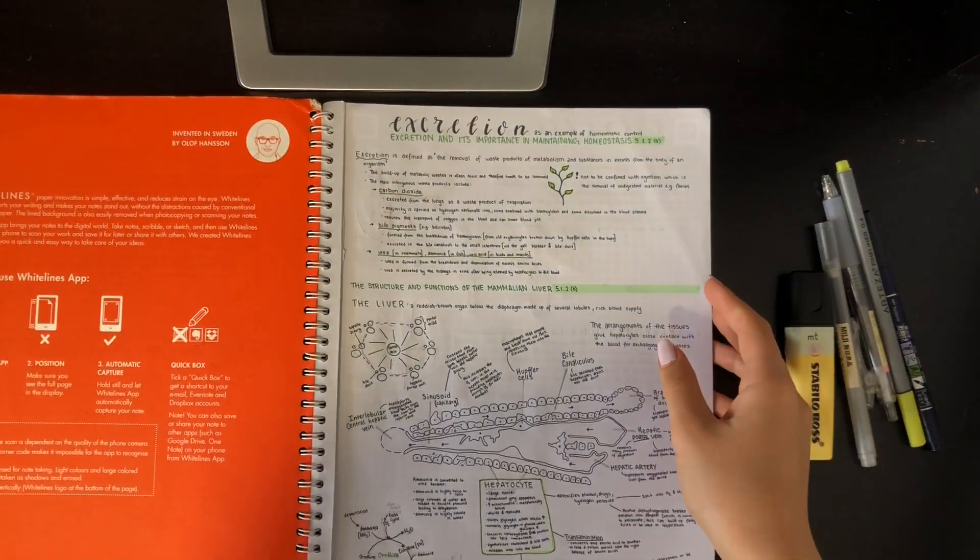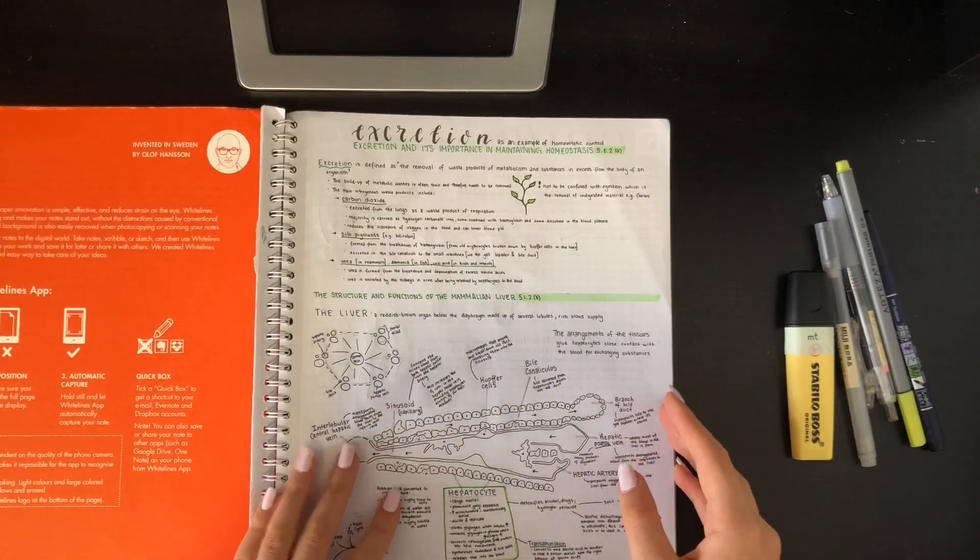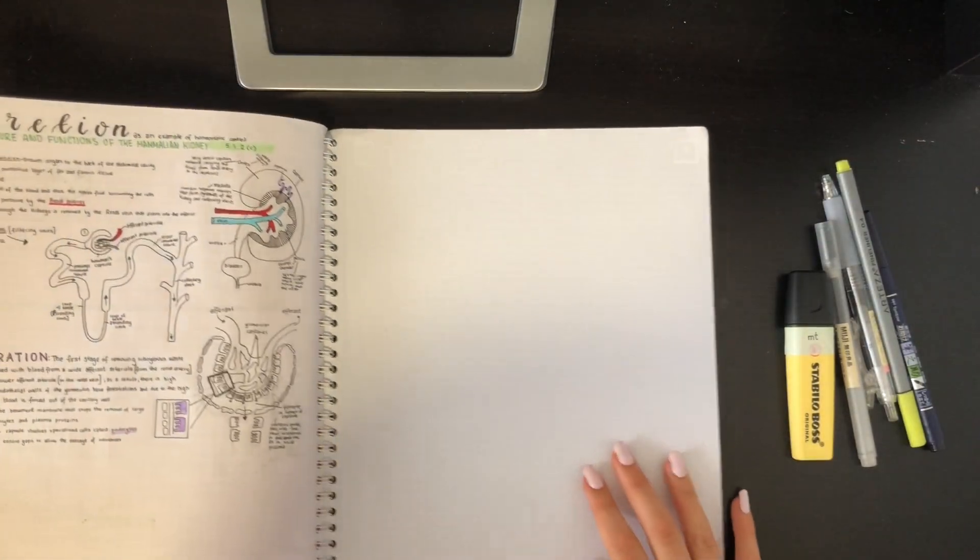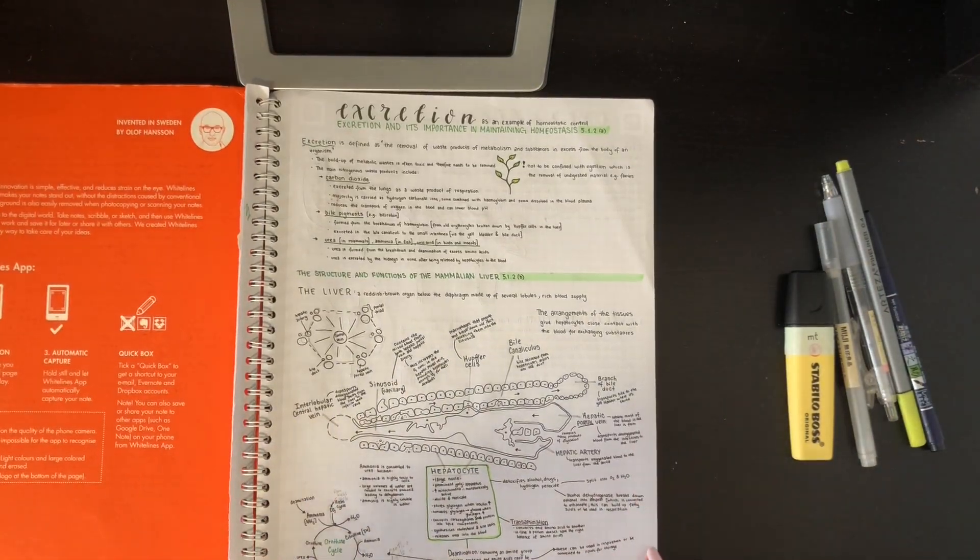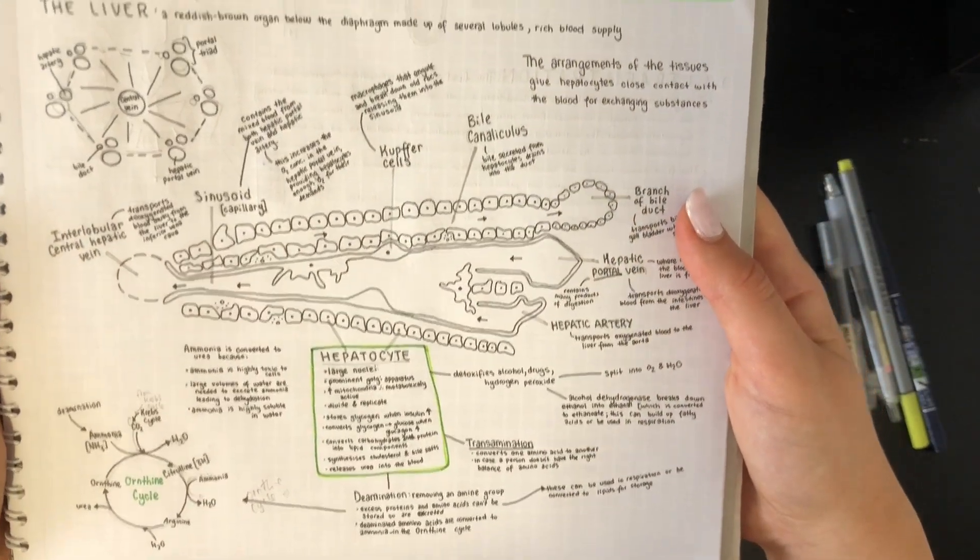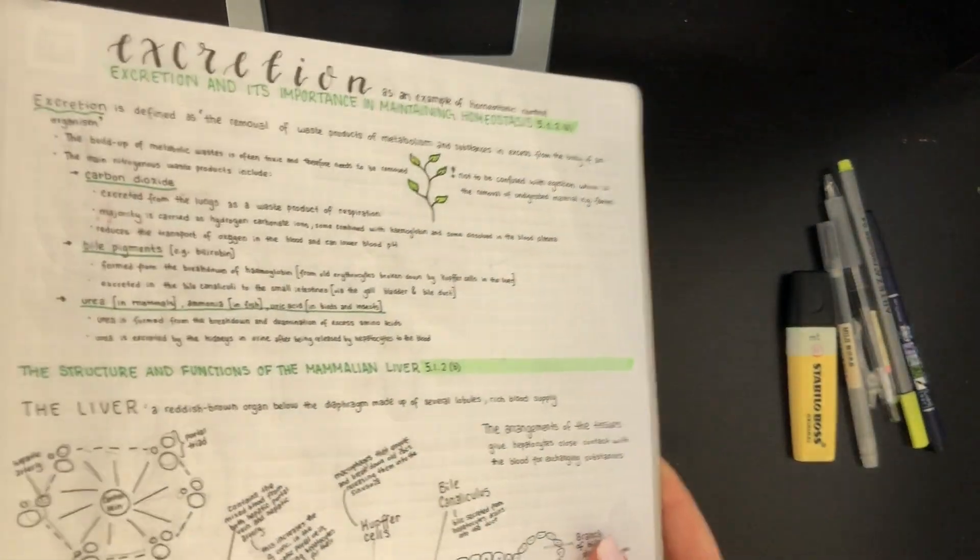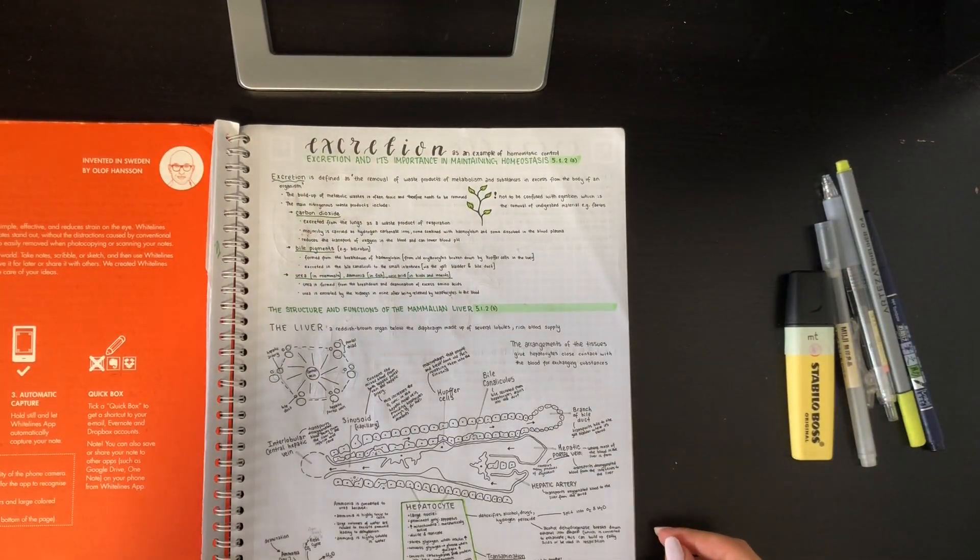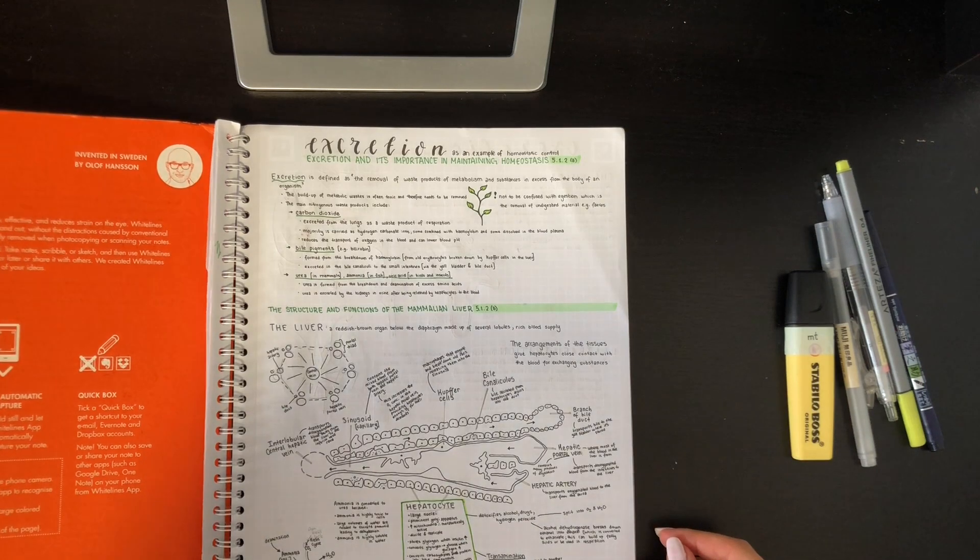So here is the White Lines paper that I use for my notes. I like to complete the topic on here before I take it out and transfer it to my arch file. Here is the topic of excretion. I have made a little diagram of the liver lobule down there. And I just really like labeling it. And I like the fact that you can scan this paper as well. Excuse the fact that it says computer science because I've definitely never done a computer science note in there. But yeah.